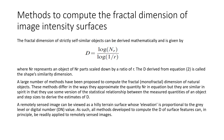Methods to compute the fractal dimension of image intensity surfaces. The fractal dimension of a strictly self-similar object can be derived mathematically from the equation D = log(nr) / log(1/r), where nr represents an object of nr parts scaled down by a ratio of r. The D derived from this equation is called the shape similarity dimension. A large number of methods have been proposed to compute the fractal, or monofractal, dimension of natural objects. These methods differ in the way they approximate the quantities in the equation, but they are similar in spirit in that they use some variation of the statistical relationship between the measured quantities of an object and step sizes to derive the estimate of D.